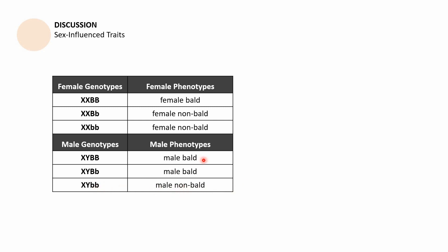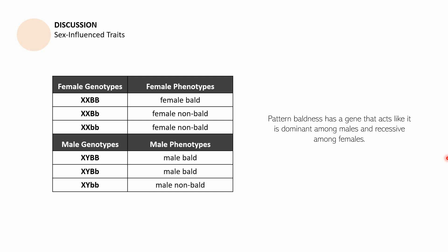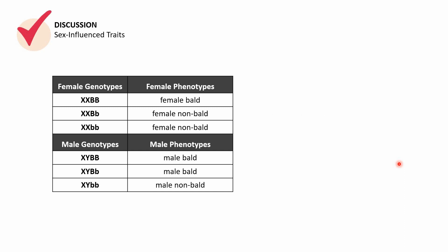What did you observe? The difference between males and females for sex-influenced traits lies in the heterozygous allele pairing. Heterozygous will make the female not express the dominant trait, and that is influenced by her sex. Whereas a male who gets that same heterozygous trait will still express baldness. The sex of the male influences the expression, while the sex of the female influences the non-expression of that trait despite the dominant allele being present. Pattern baldness has a gene that acts dominant among males and recessive among females, because it is influenced by the sex.